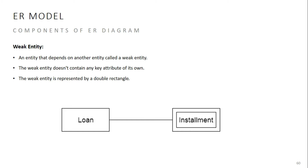For example, if an entity exists only when another entity exists, that is a weak entity. A weak entity is represented by a double rectangular shape. For example, if I have a loan in my bank, the loan installment entity depends on the bank loan entity. That is why the installment entity is a weak entity.